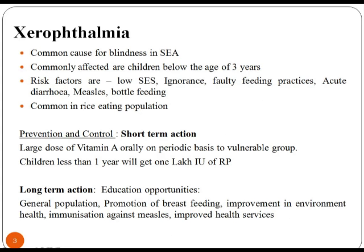Xerophthalmia. Xerophthalmia is a condition in which an eye becomes abnormally dry because it cannot maintain an adequate layer of tears to cover its surface. There are a number of reasons which can cause Xerophthalmia including wind, dry air, working long hours on a computer, and vitamin A deficiency. Prevention and control: